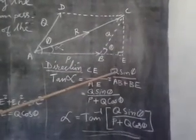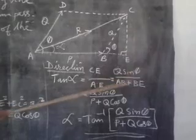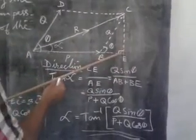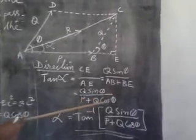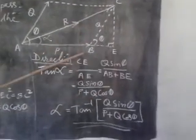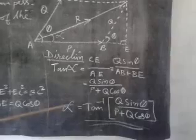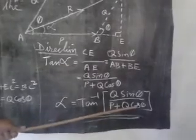That equals Q sine theta divided by AE. AE equals AB plus BE. You get P plus BE equals Q cos theta from this triangle. Again, so alpha equals tan inverse of Q sine theta divided by P plus Q cos theta.